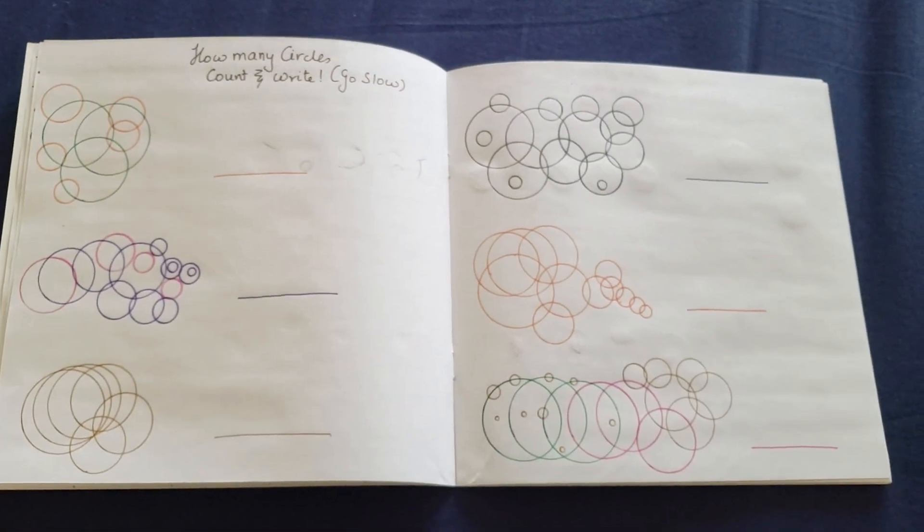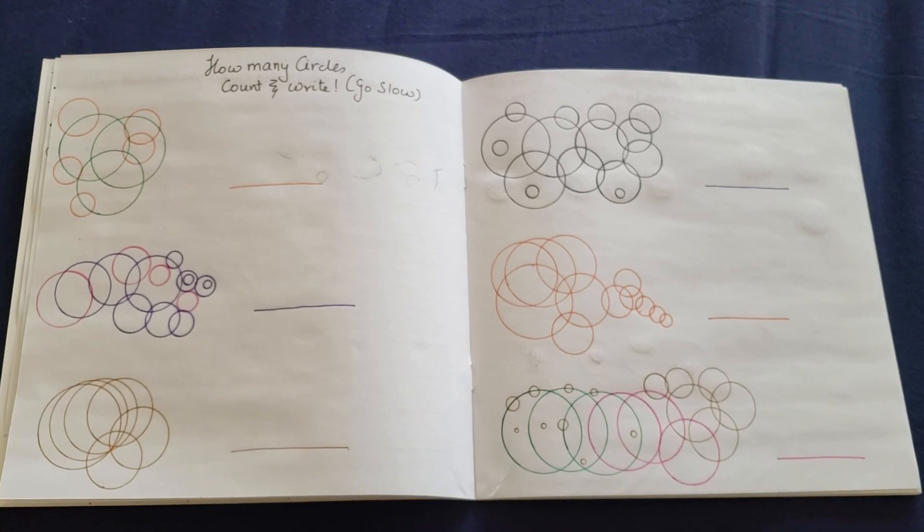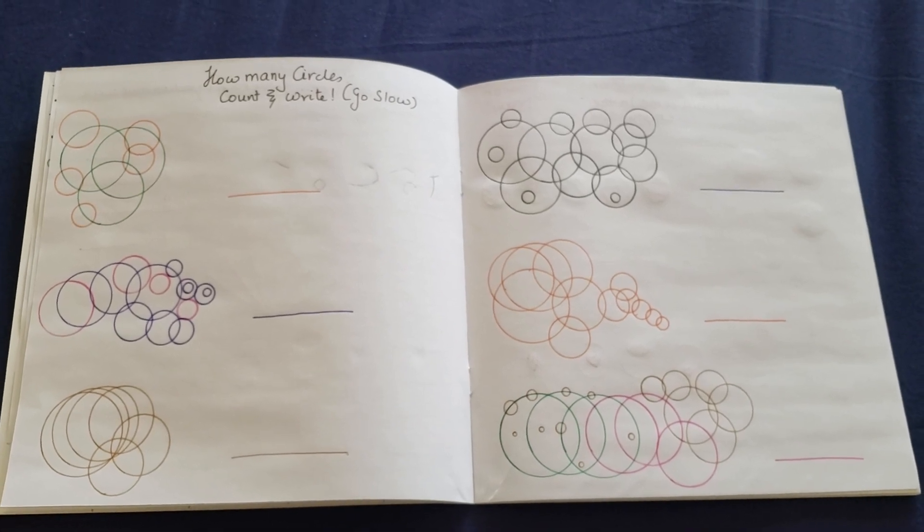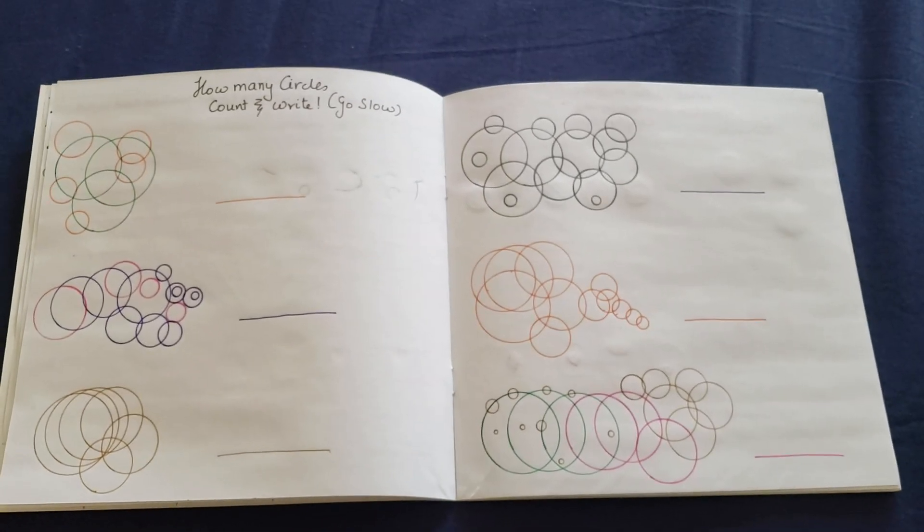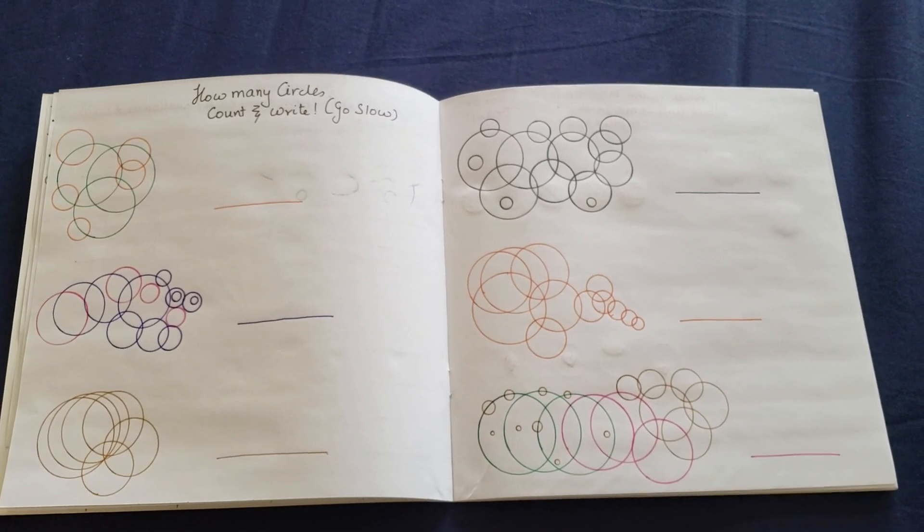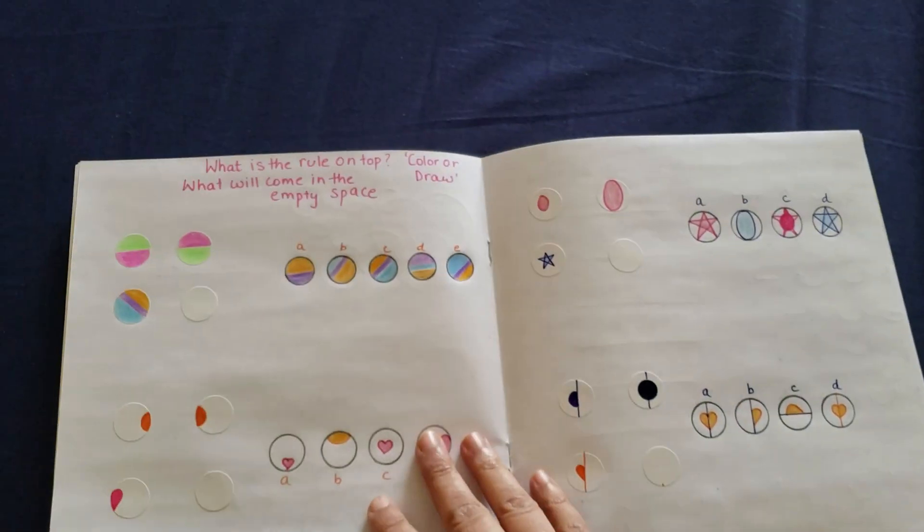Now it says how many circles, count and write and go slow. There are, trust me, many circles that you think just while seeing that there are, but there are many more than that. You have to count very slowly and gradually. There might be a trick. You have to figure it out and count and write.